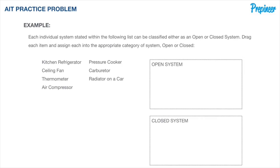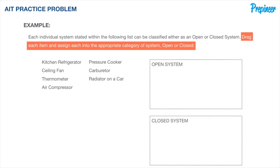To start, let's identify what exactly we are being asked to determine in this problem. This isn't unique to AITs — I always teach students to first identify and make certain they know exactly what is being asked, because in longer problem statements information can get jumbled. Under timed conditions, something so simple can be catastrophic on a problem you know and should be getting correctly. This problem asks us to take the list of systems and assign them into the appropriate category, either open or closed.